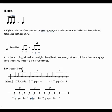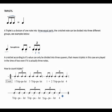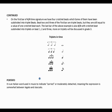You can count triplets as 'one and uh, two and uh, three and uh, four' — whichever way is easier for you. In a four-four bar, beats two and three of the first bar are triplet beats, but they are still equal to the value of a crotchet beat. Each triplet occupies one full crotchet beat because they are divided equally into three parts.